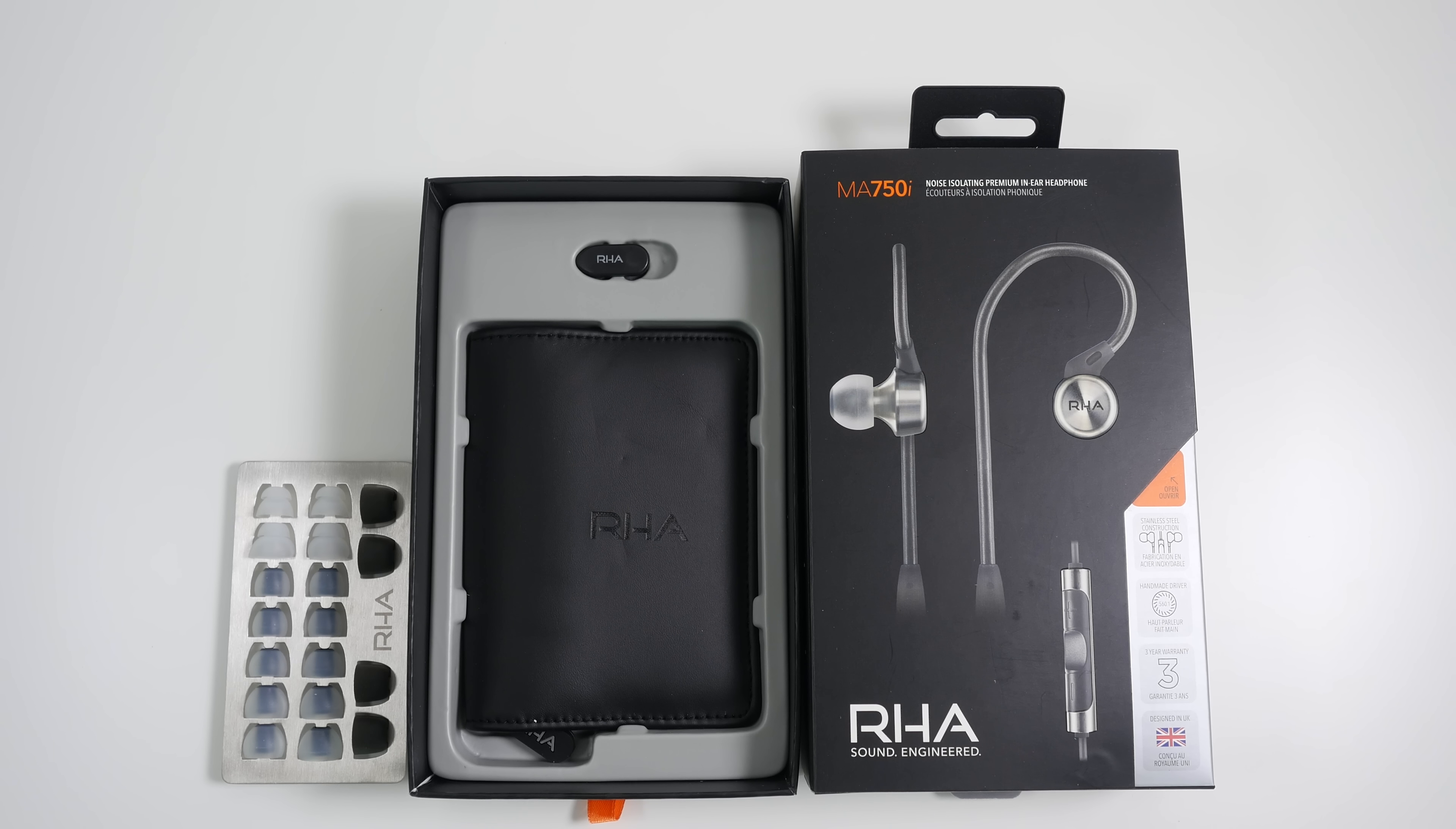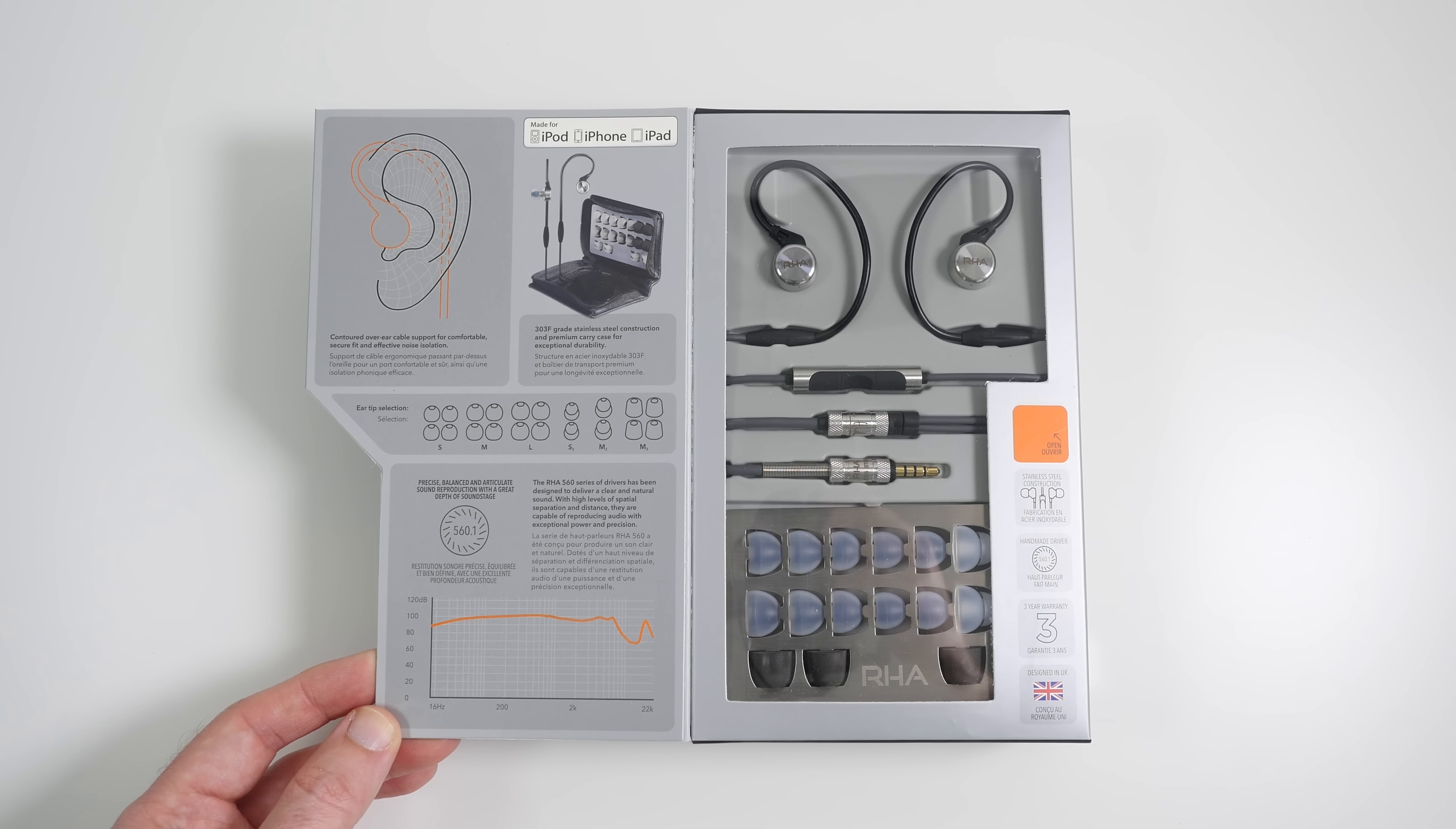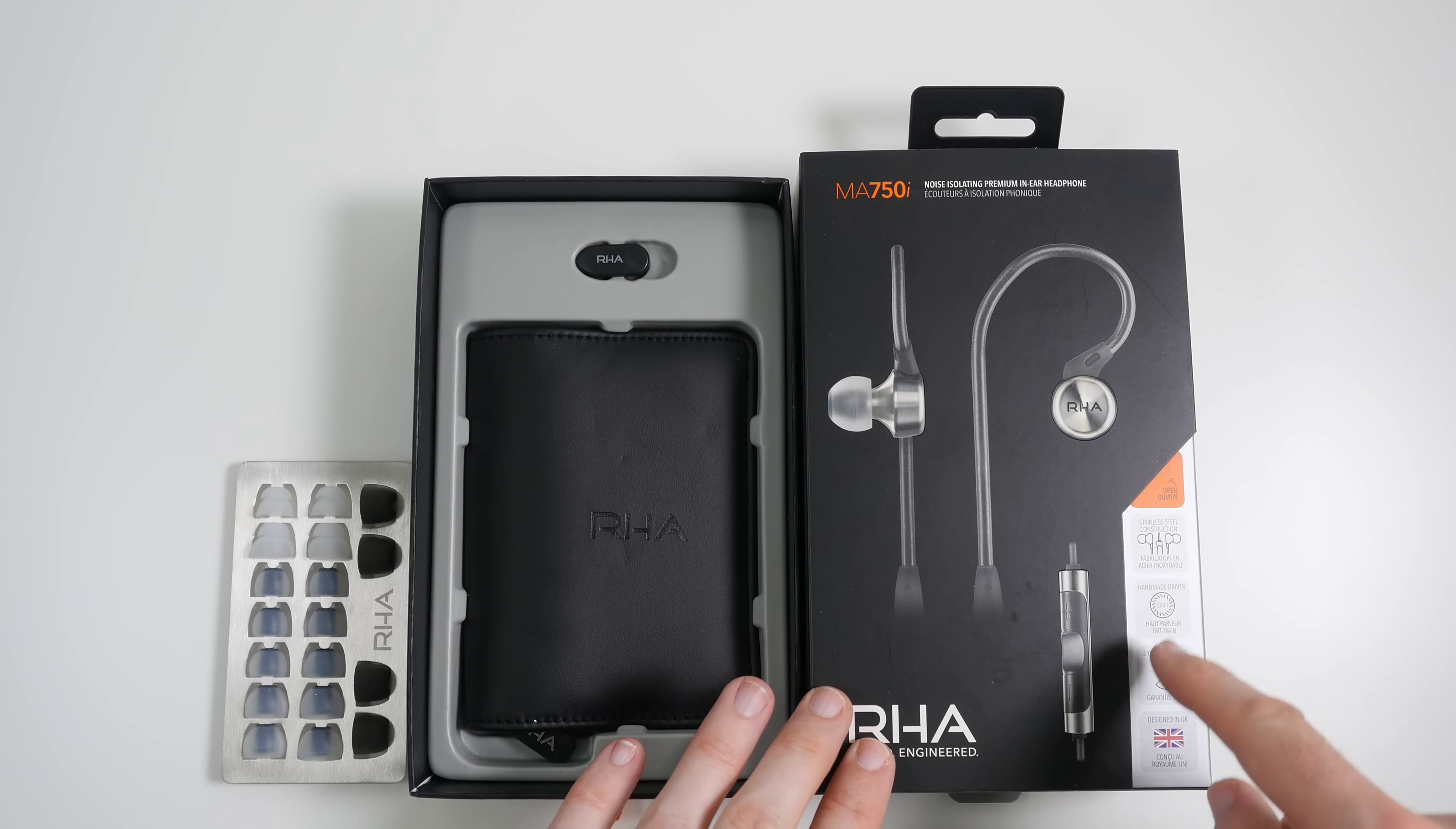Hi everyone, this is Dave from Geekanoids and these are the RHA or Reed and Heath Acoustics MA750i. These are noise isolating premium in-ear earphones and I wanted to show you on the screen before I unbox these how beautifully presented these are. Just such nice packaging, but moving on, let's take a look at the box first of all.